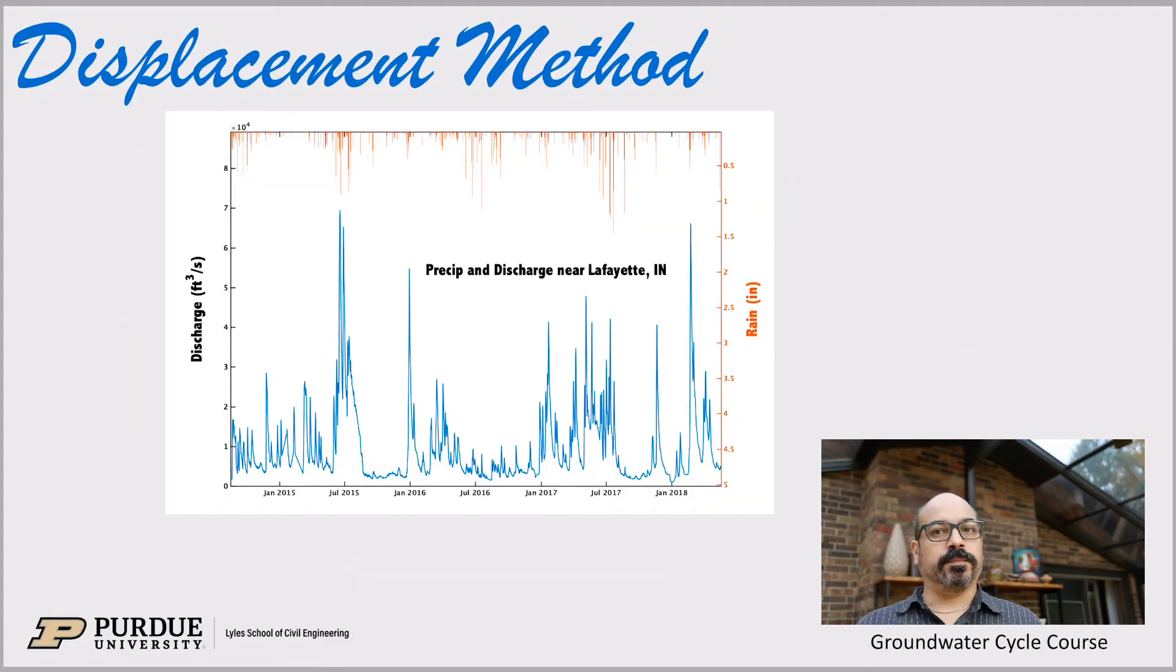And just a quick reminder of what hydrographs are. So here's a plot of data from here at Purdue. So again this is the Wabash River that goes through town here. And in blue here you have the flow in the river over the course of a few years from 2015 to 2018-19.